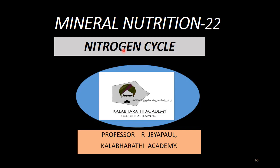It can be taken by the plants, then plants will be taken by the animals. Again, plants and animals will be taken by the animals. This is called the nitrogen cycle.